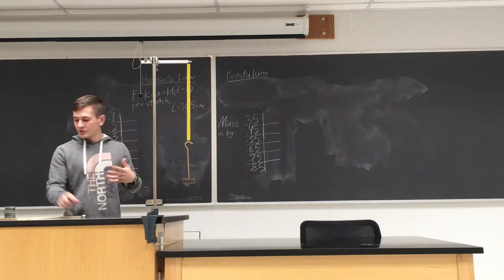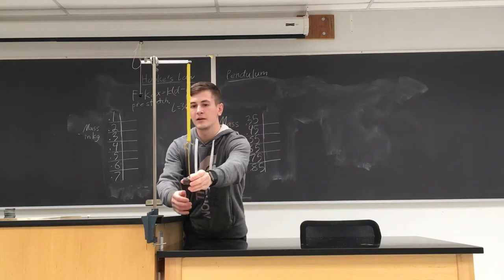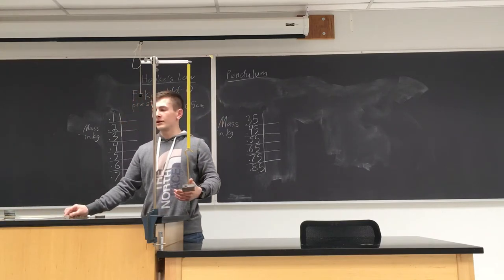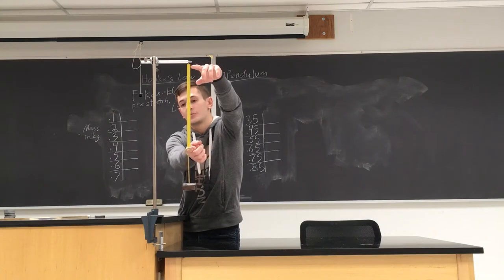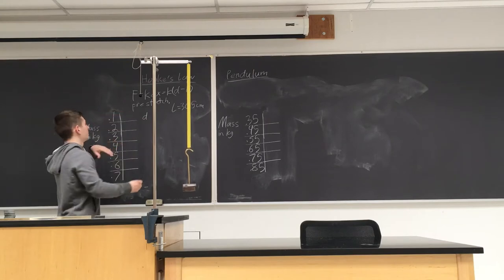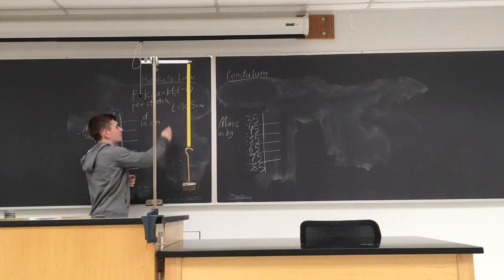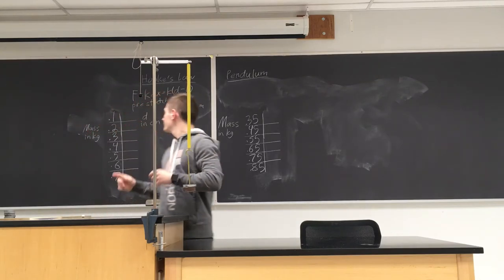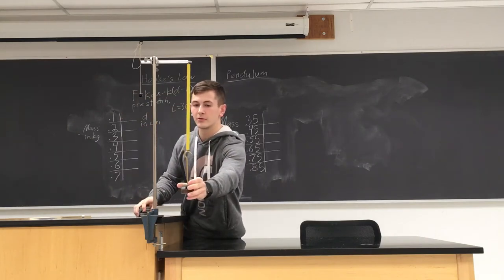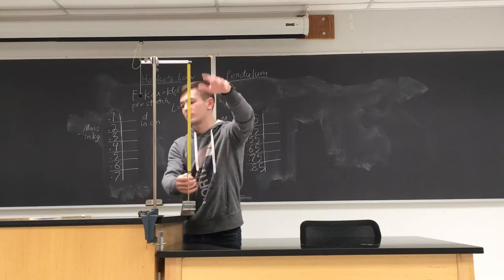To start taking data we need to start with 100 grams. Put it on the hanger and you'll see that when I put it on, the spring will stretch downwards. We can then record the length of the spring, which is D — the total stretched length of the spring in centimeters. We need to continue to add 100 grams each trial, measuring the total stretched length each time.